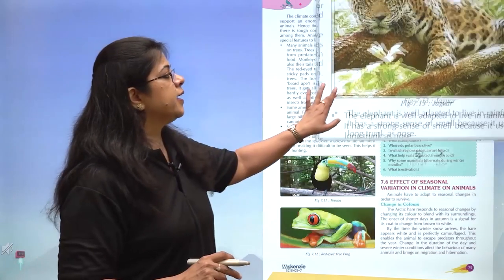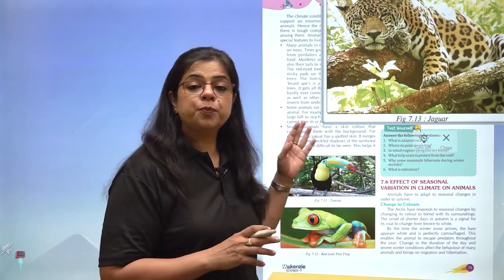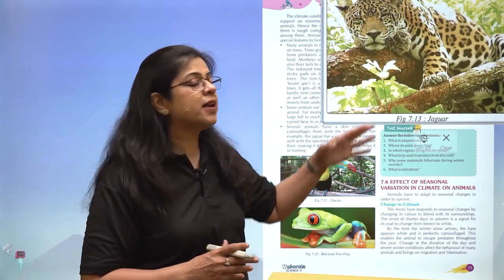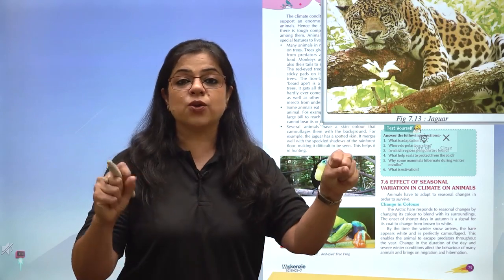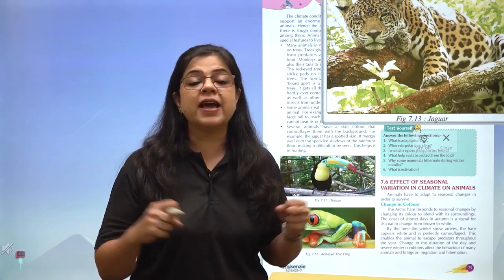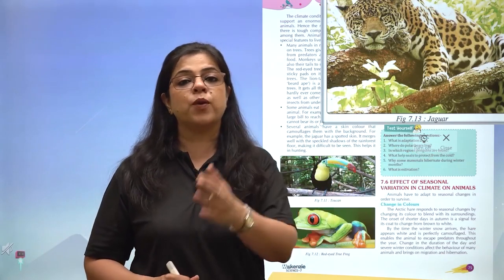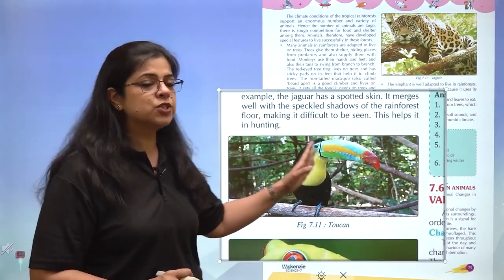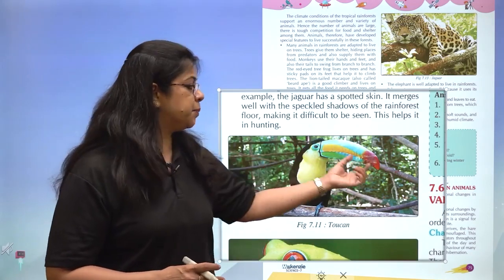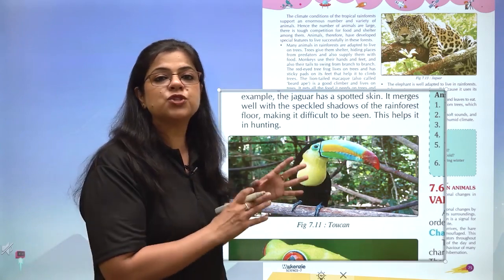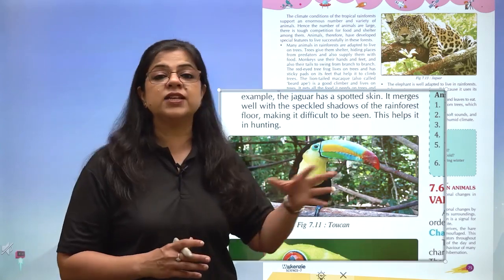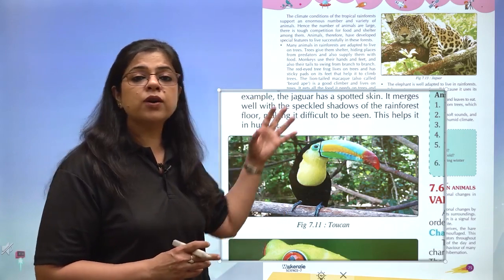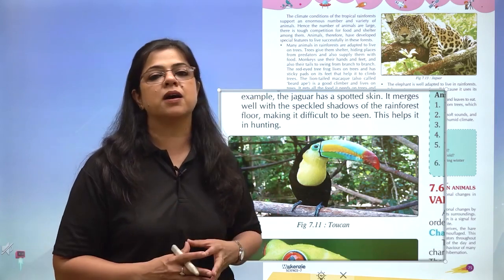Trees mein rahne se barish ka effect kam hota hai, aur jo predators hote hain woh neeche ki branches tak toh ja sakte hain, oopar ki branches pe nahi ja sakte. Because these animals like to live on trees, inke hands aur feet bohut strong hone padte hain. They also have a very long tail jiski help se they can jump from one branch to another. A very amazing adaptation is found in the toucan bird - its beak is exceptional, with a very long and strong beak. This helps it reach those very thin and breakable branches jahaan fruits lage hote hain, where bigger animals like monkeys and macaws cannot reach.